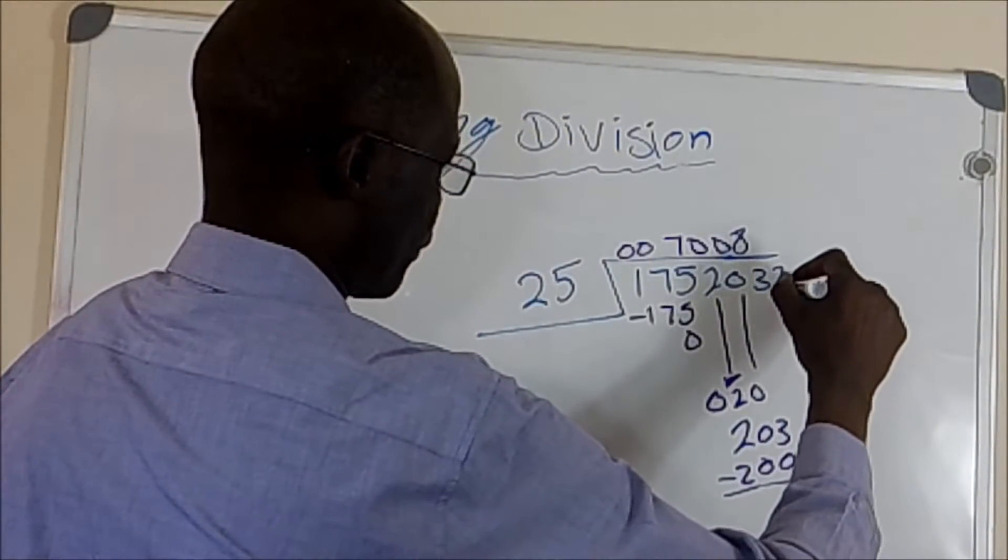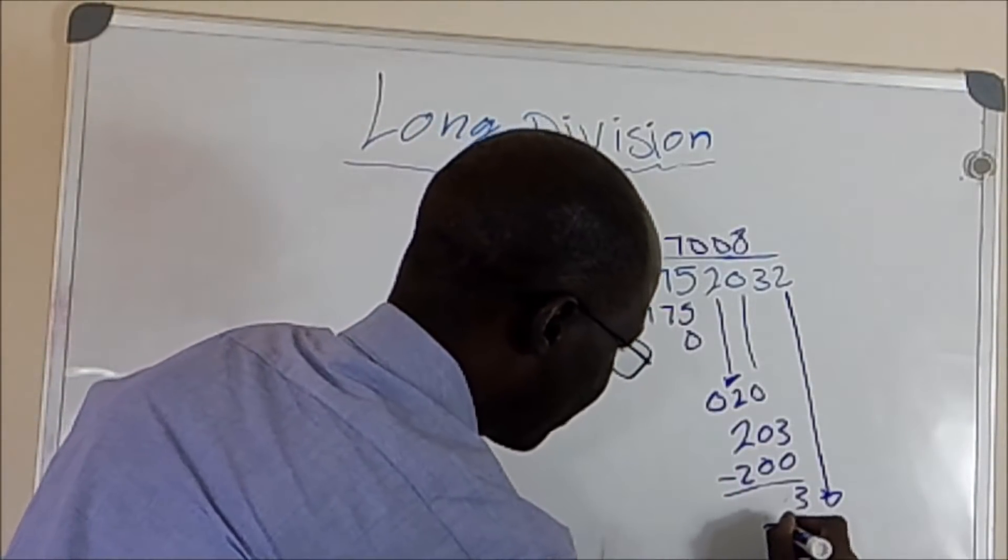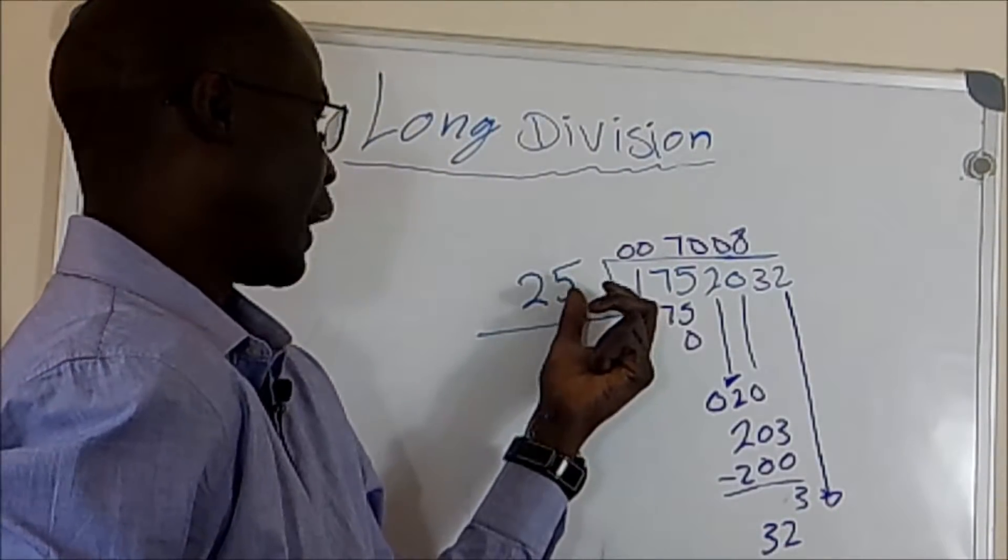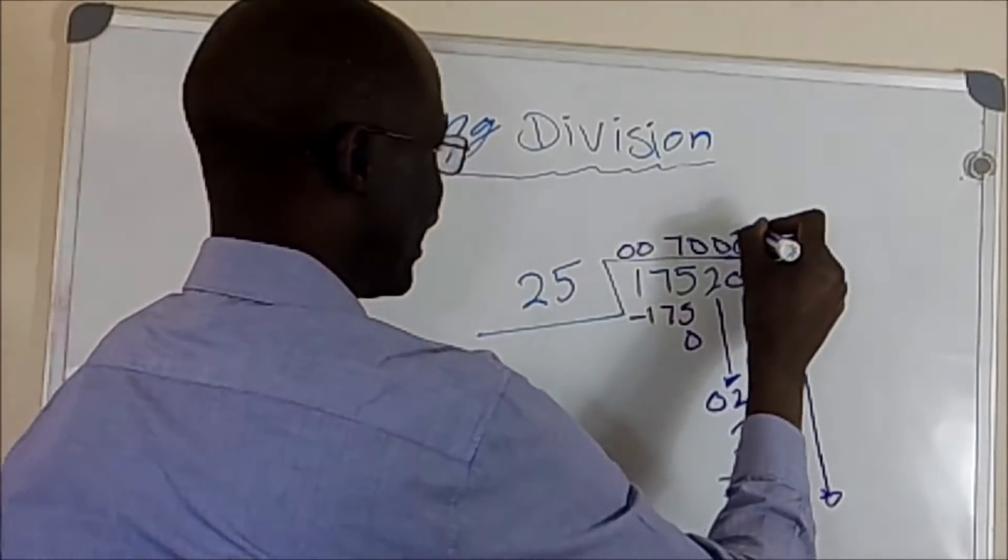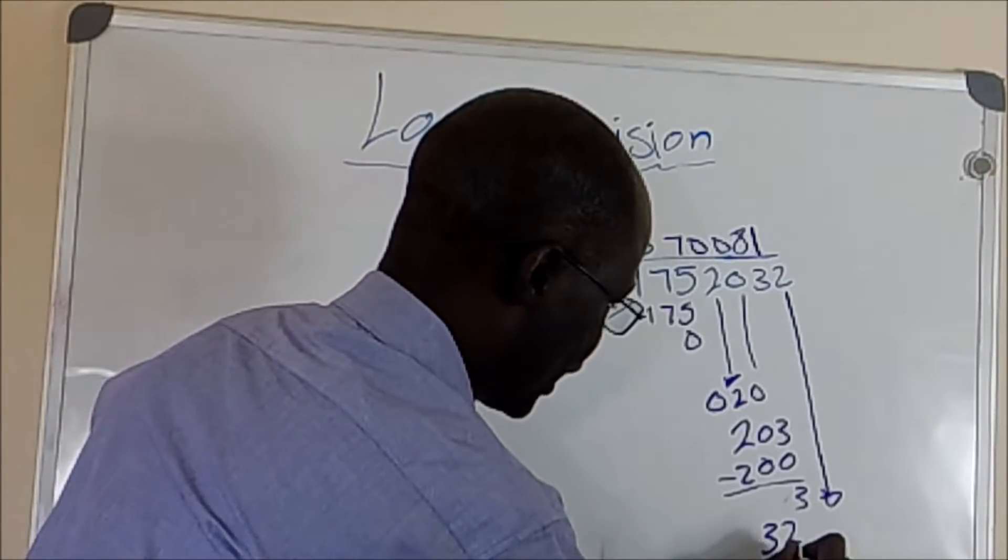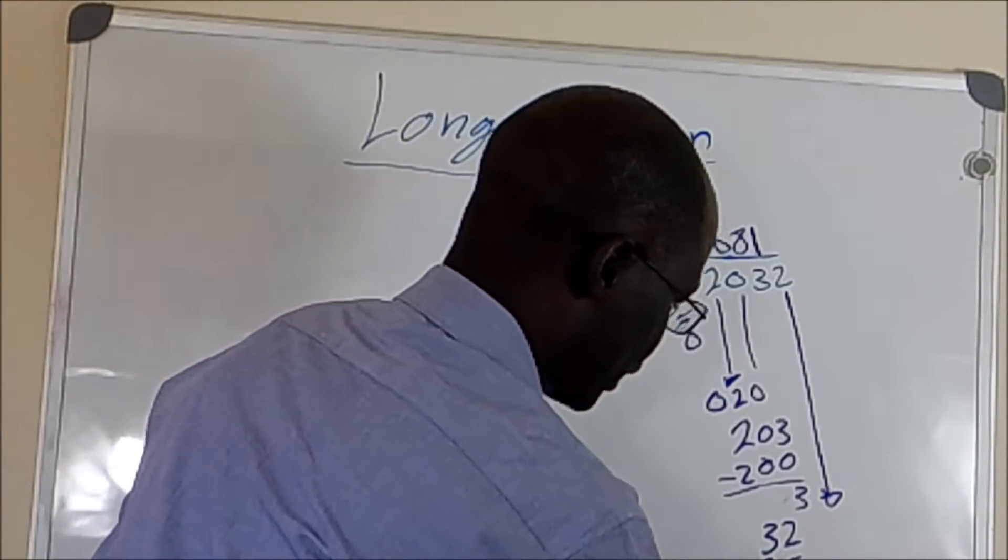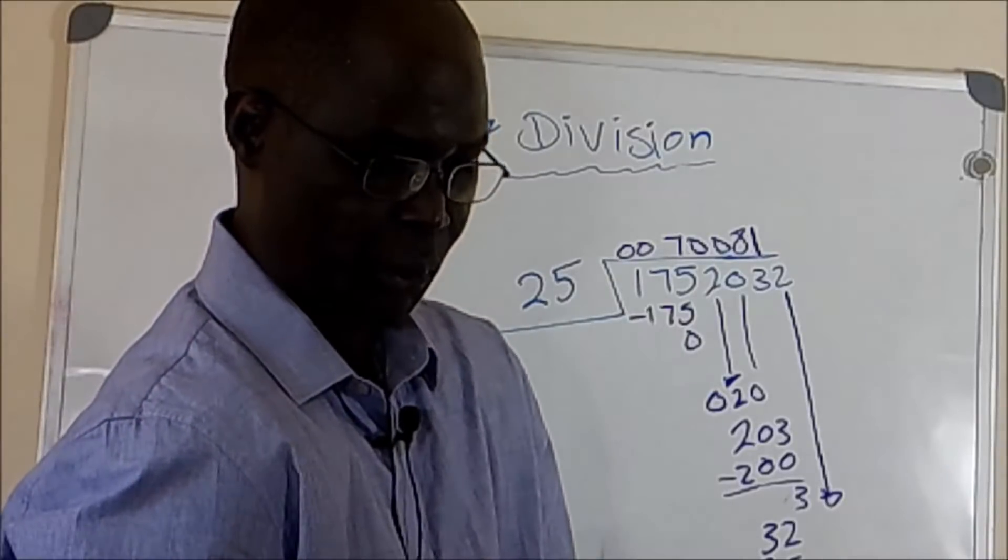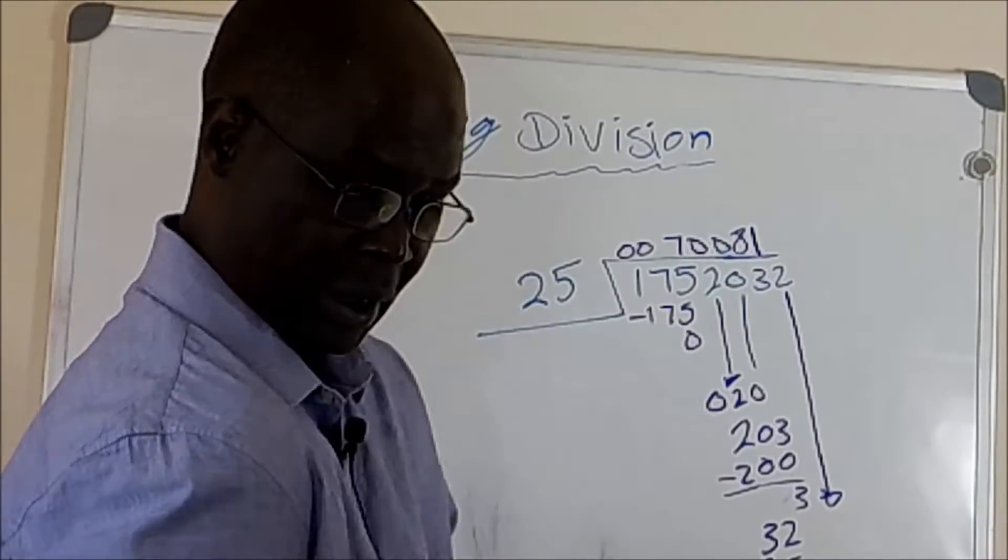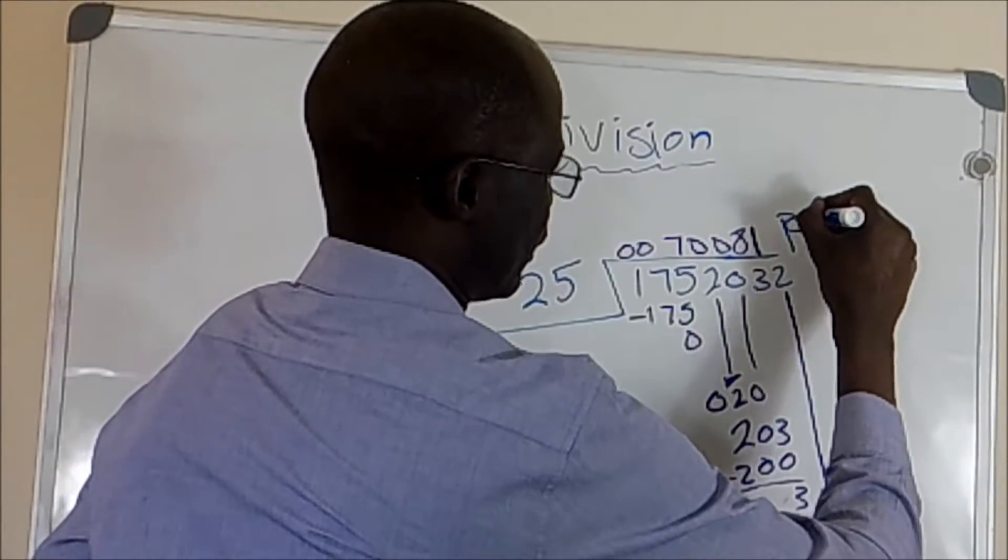Therefore, you already have 3, so you're going to bring down, or you drop 2 down. So you're going to have 32. And 32 is greater than 25, so it can be divided. So we're going to have 1, and 25 from 32 is going to leave remaining 7. So the way we see it, we have 7,081 and remaining, so we should type R7.